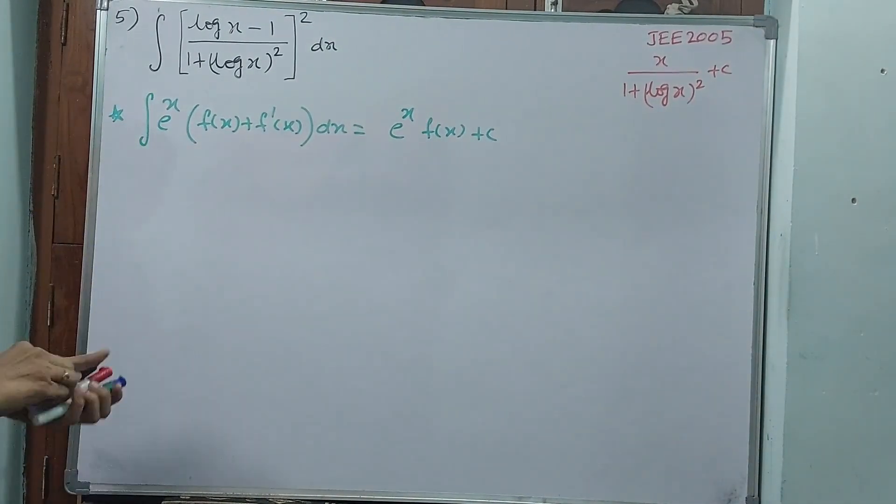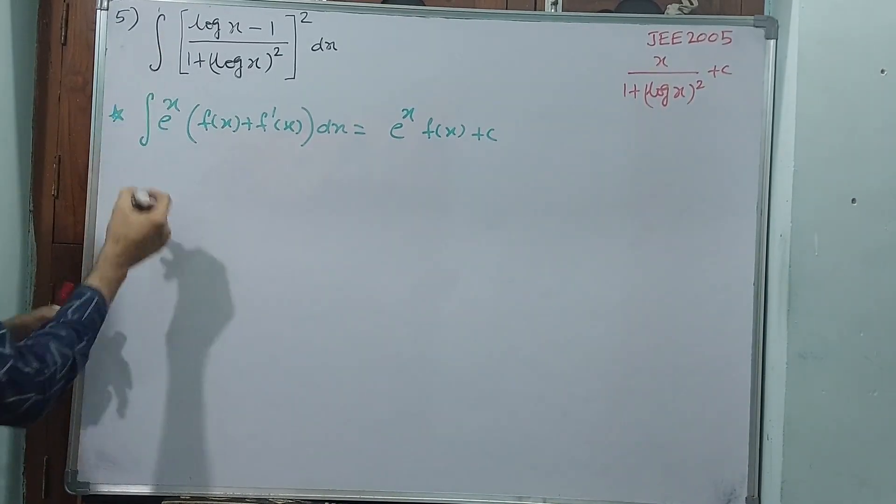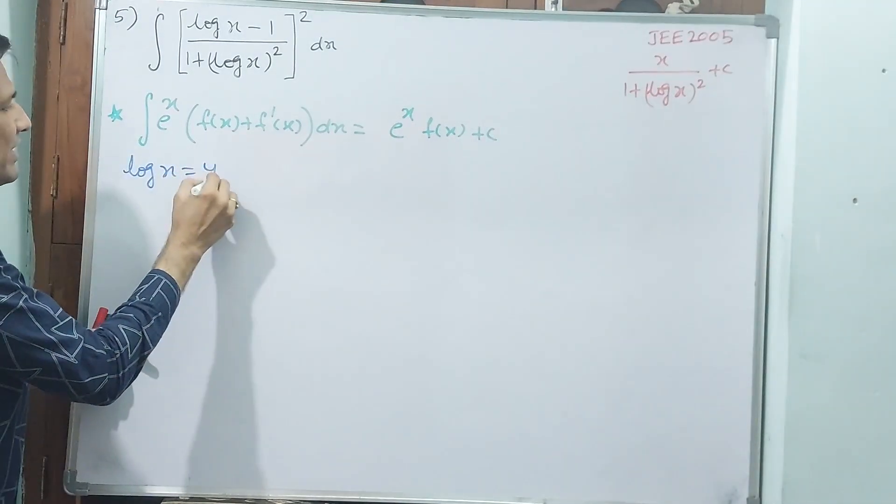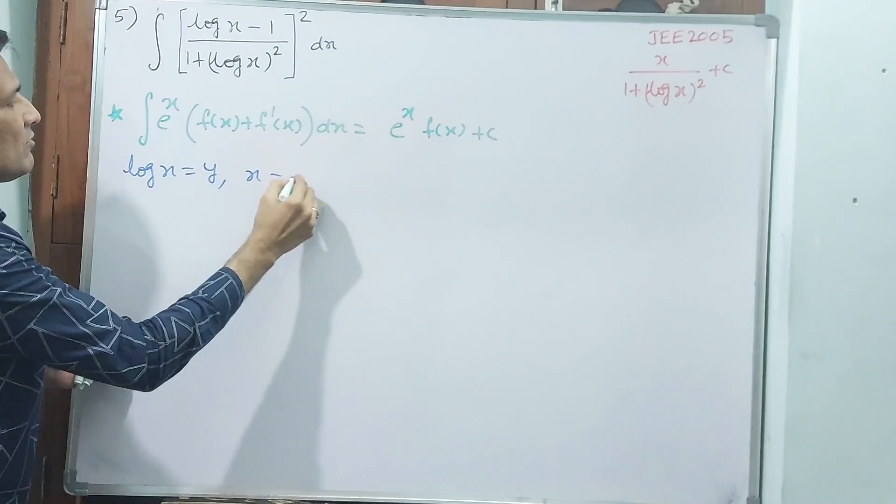Now, see what I am doing here. Log x I am taking as y. If I take log x as y, automatically x is equal to e power y.